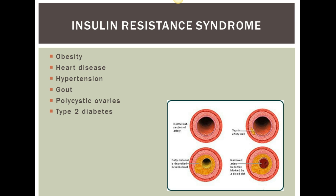With insulin-resistant syndrome, this is a complex disorder with relating symptoms. The comorbidities listed — obesity, heart disease, hypertension, gout, and polycystic ovaries — have a common link of increasing the risk of diabetes mellitus and heart disease. Insulin-resistant syndrome is also often referred to as metabolic syndrome.